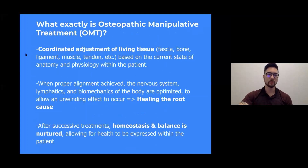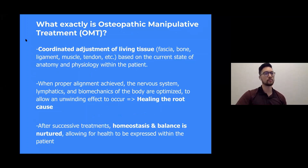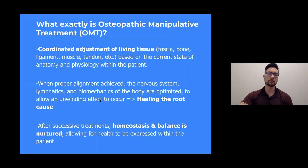Osteopathic manipulative treatment — OMT — is a style of treatment using our hands to coordinate adjustment of living tissue: fascia, bone, ligament, muscle, tendon, even the visceral organs, based on the current state of the anatomy and physiology within the patient. When you achieve proper alignment of these structures, the nervous system, the lymphatics, and biomechanics are all optimized, and you can then heal the root cause of an injury or a disease state.